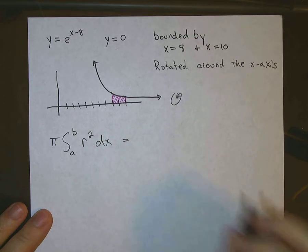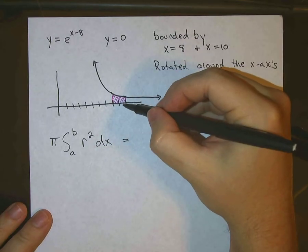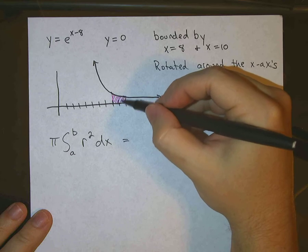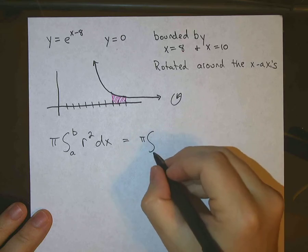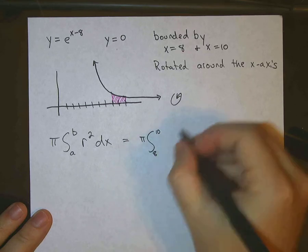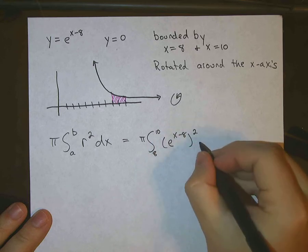Okay, our radius is, of course, defined by the function here, e to the x minus 8. So it's going to be pi from 8 to 10 of e to the x minus 8 squared dx.